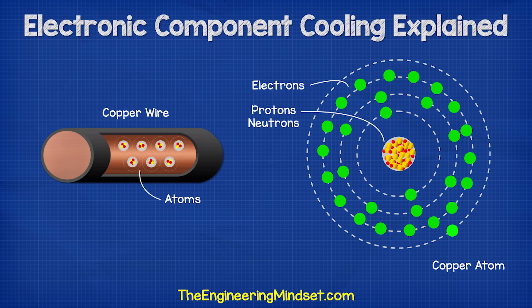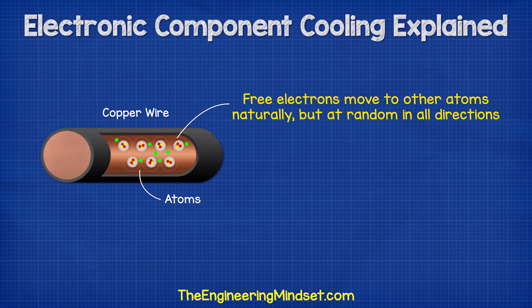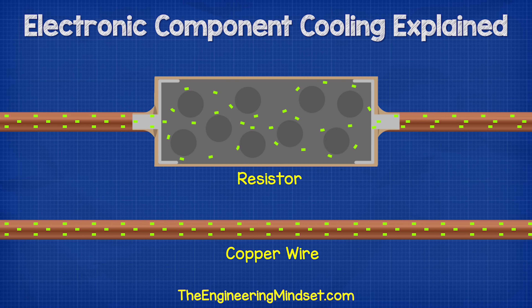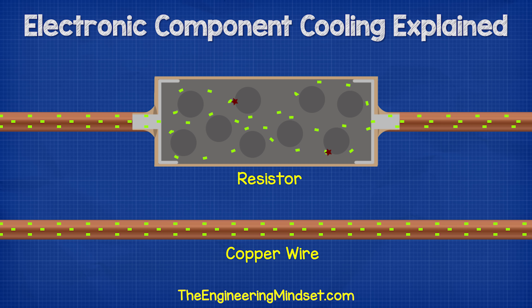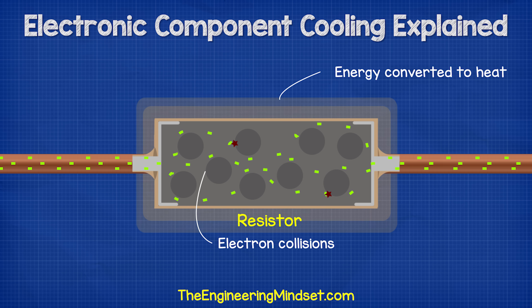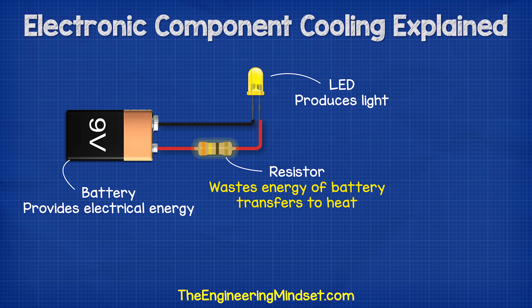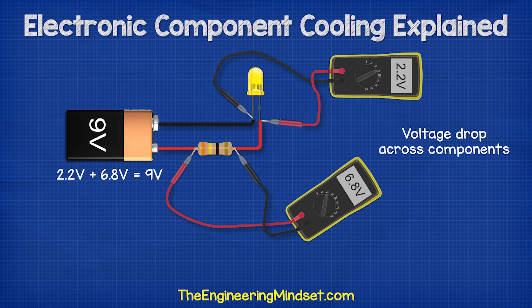They do naturally just move to other atoms, but randomly and in all directions. If we apply a voltage difference across the wire, the voltage or pressure of the battery will force electrons to flow through it. But with a resistor, the material is less conductive and creates a harder path for the electrons to flow through. The electrons are going to collide and as they collide, their energy is converted into heat. So the energy of the battery is really being wasted and turned into heat. Because the energy of the battery is being removed by the resistor, we get a voltage drop.